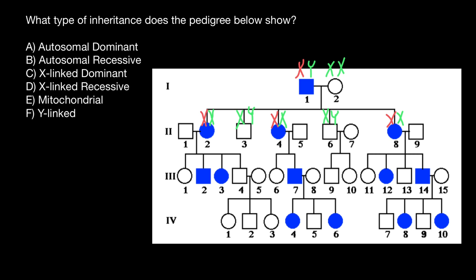We assume that all people who are genetically unrelated to this couple are going to be phenotypically and genotypically normal — so all people who marry into this family. This male has a specific genotype, as does this male, this female, and this other male.